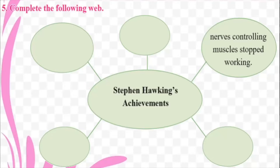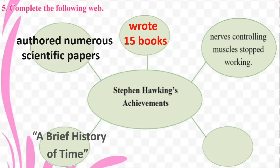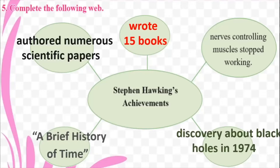Now let us take a quick look at all the achievements in Stephen Hawking's life. His major impediment was that his nerves which controlled his muscles had stopped working. But in spite of that, he wrote 15 books and authored numerous scientific papers. He was a physicist as well, and he wrote the book A Brief History of Time. He also discovered things about black holes in the year 1974 — all this despite being confined to a wheelchair.